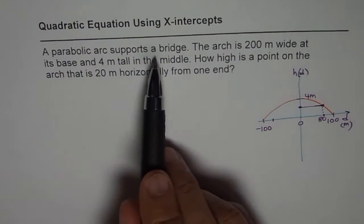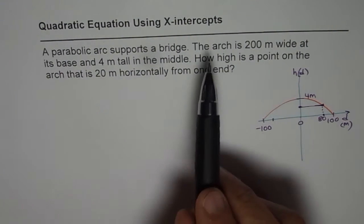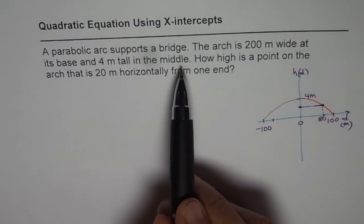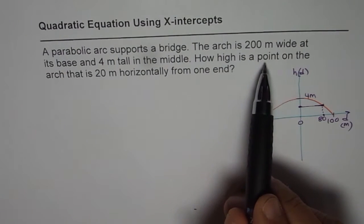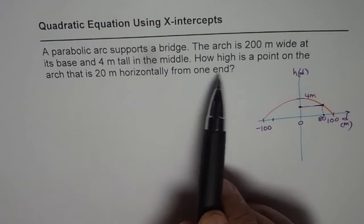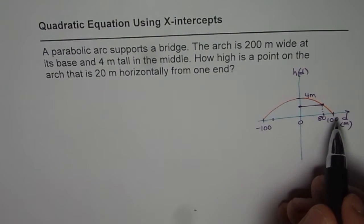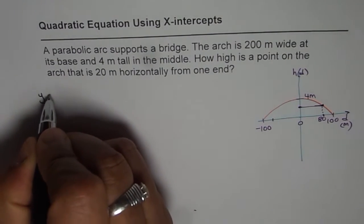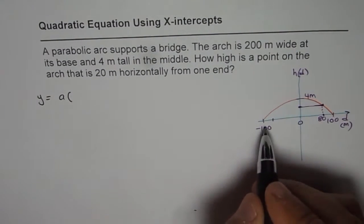A parabolic arc supports a bridge. The arc is 200 meters wide at its base, 4 meters tall in the middle. So how high is the point on the arc that is 20 meters horizontally from one end? So let's find the equation of this bridge.